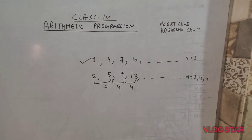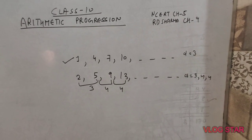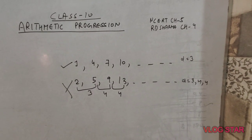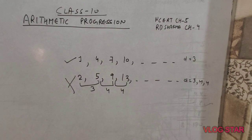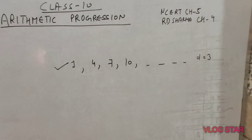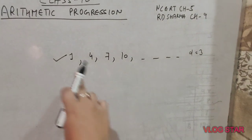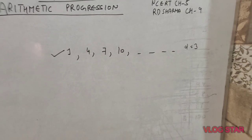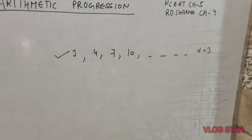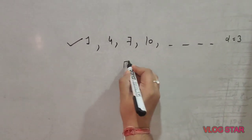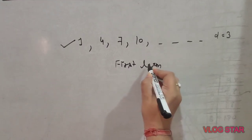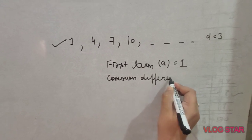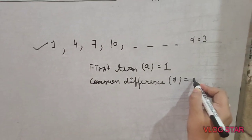This violates the condition for arithmetic progression. A series where the difference is not constant cannot be called an arithmetic progression. In the first series — which we considered an AP — all values are called terms: first term, second term, third term, fourth term, and so on up to the nth term. The common difference here is 3. The first term is 1, and the common difference D is 3.